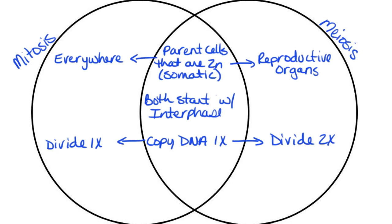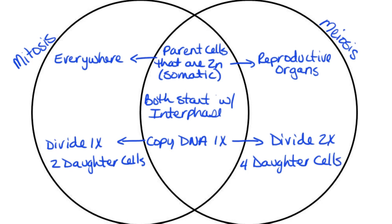In mitosis we get two daughter cells, but in meiosis we get four daughter cells. The status of these daughter cells is going to be a little bit different. The mitosis daughter cells are going to be diploid and they're going to be identical — identical to each other and identical to that parent cell they came from. In the case of the meiosis daughter cells, these are going to be haploid and they're going to be all different.